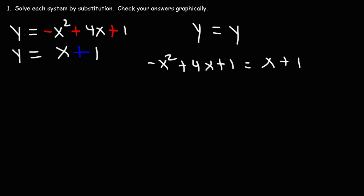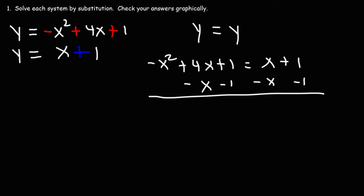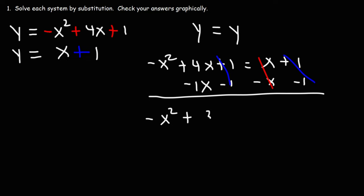So now we can solve for one variable. Let's solve this equation for x. I'm going to move everything from the right side to the left side by subtracting both sides by x and by 1. The ones will cancel, and x and negative x cancel, leaving negative x squared plus 3x — since 4x minus 1x equals 3x — all equal to zero.